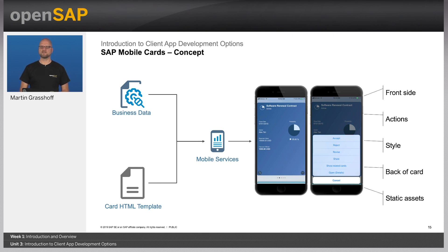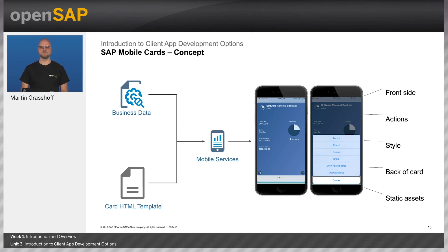It's a little bit hard to understand mobile cards at the beginning, but once you figure it out, it's quite easy. A simple mobile card basically consists of two things: an HTML template which is filled with particular data from a backend system. We merge that using mobile services, and then you consume it on the device. A card consists of a front side, but you can also flip the card and see more detailed information on the back. You can style the card to your needs, adjust the colors and graphics — everything is fully under your control, and you can also add static assets. Charting is also available. And at the end, you can add actions to the card — simple actions like approve, reject, and custom actions as well.